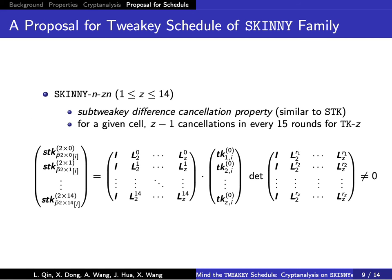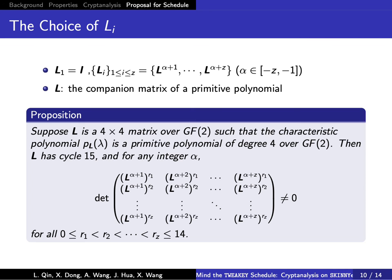We propose a unified design strategy for the Tweakey Schedule of SkinnyN/Zn for positive integer Z less than or equal to 14. To satisfy the sub-tweakey difference constellation property, the coefficient matrix should satisfy the logMDS property. Our construction is an extension of the generator matrix of RS codes. We set L1 to the identity matrix and choose Li to be consecutive powers of a matrix L.